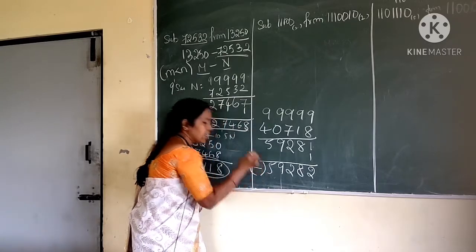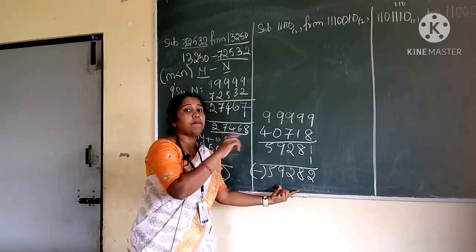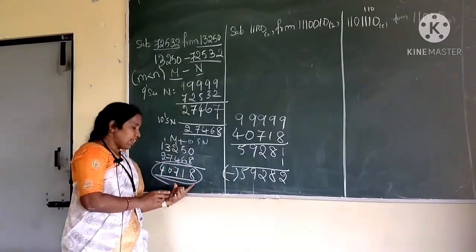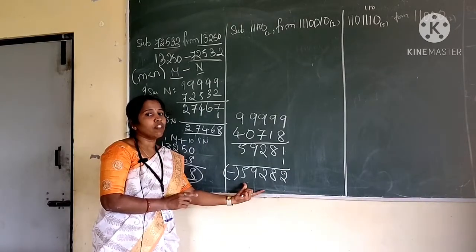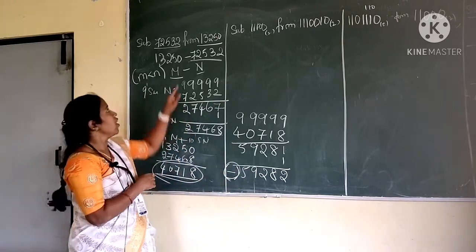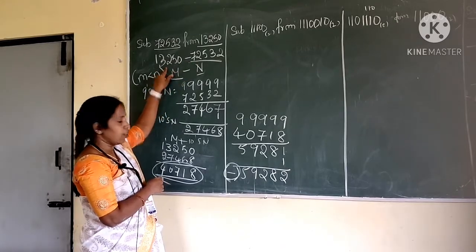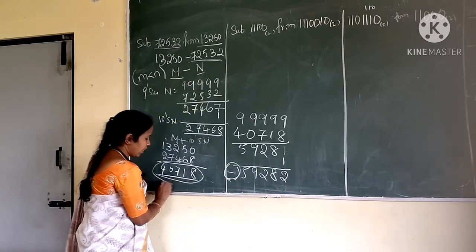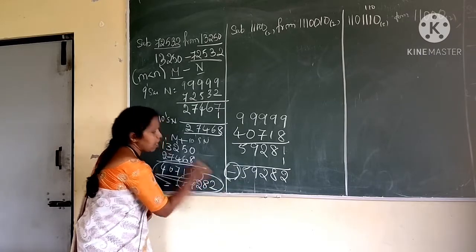You have to place a minus sign here. There you do not have this extra step — why? Because m is greater than n. But here m is less than n. When m is less than n, for the result you have to find out the r's complement of the given result, and that result must be preceded with a minus sign. So if you take away 13,000 from 72,000 you get 59,000 with a minus sign. The answer is minus 59282.